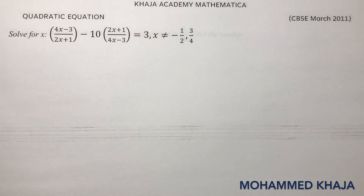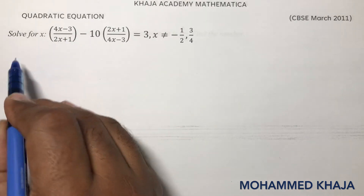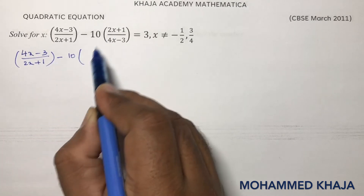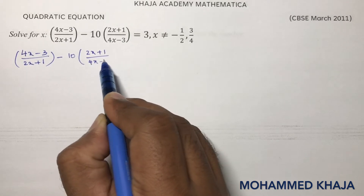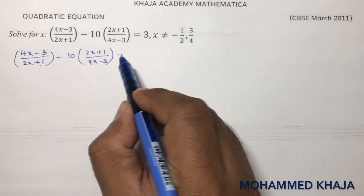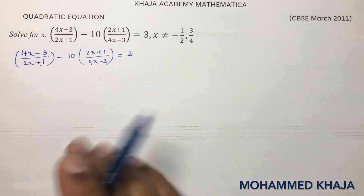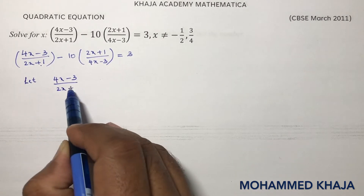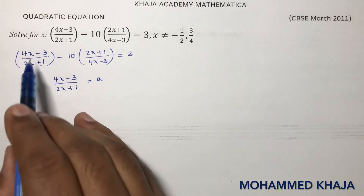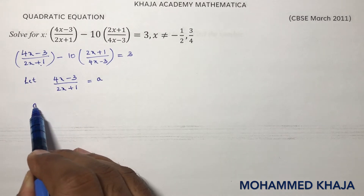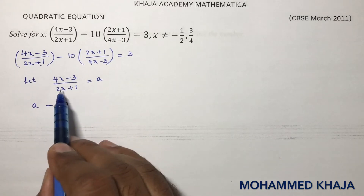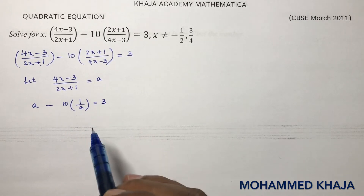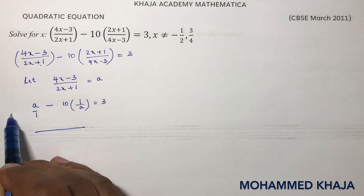Here we need to solve for x. If you observe the question carefully, these two terms — (4x minus 3) by (2x plus 1) and (2x plus 1) by (4x minus 3) — are reciprocals of each other. To simplify, let a equal (4x minus 3) by (2x plus 1). Don't take x as the substitution variable since the question is already in terms of x. Then the equation becomes: a minus 10 times (1 by a) equals 3.